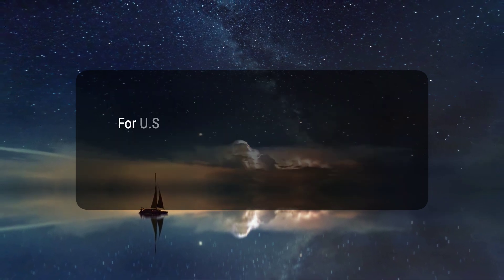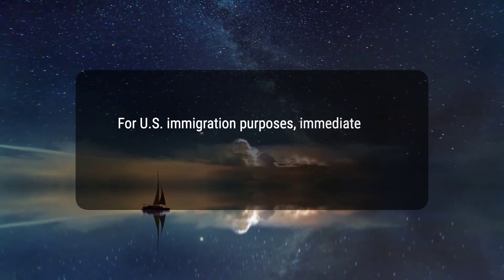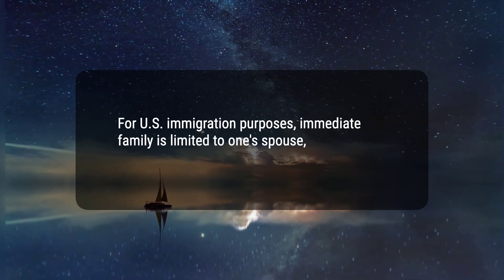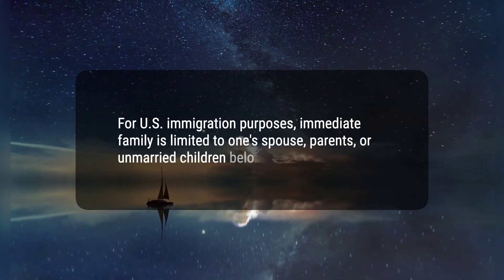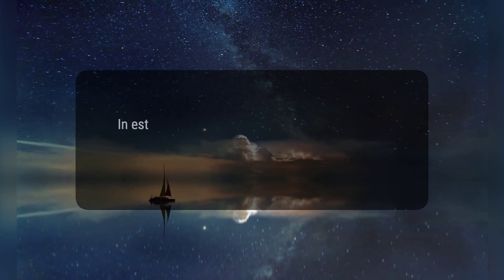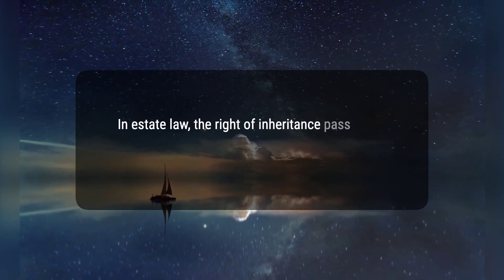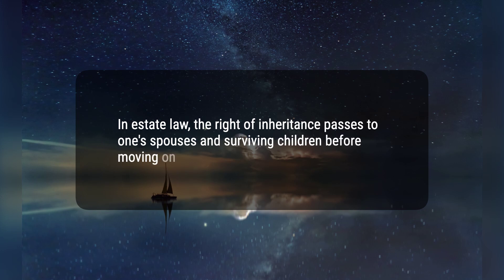Four: for U.S. immigration purposes, immediate family is limited to one's spouse, parents, or unmarried children below age 21. Five: in estate law, the right of inheritance passes to one's spouse and surviving children before moving on to other relatives.